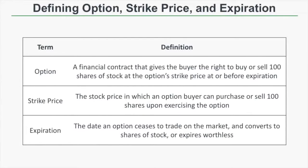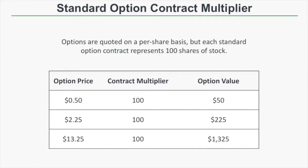An option is just a financial contract that gives the buyer the right to buy or sell 100 shares of stock at the option strike price at or before expiration. A strike price is the stock price at which the option buyer can purchase or sell 100 shares upon exercising the option. An expiration is the date at which an option ceases to trade on the market and converts to shares of stock or expires worthless.